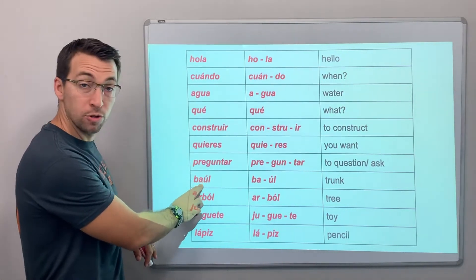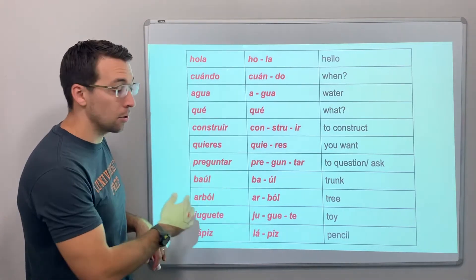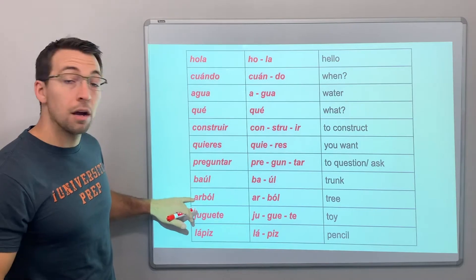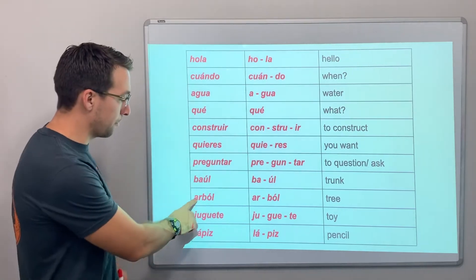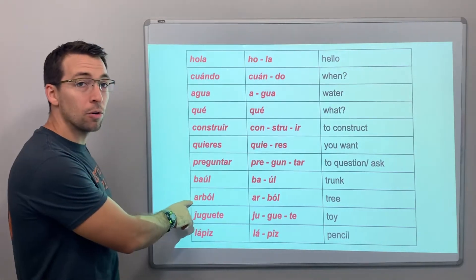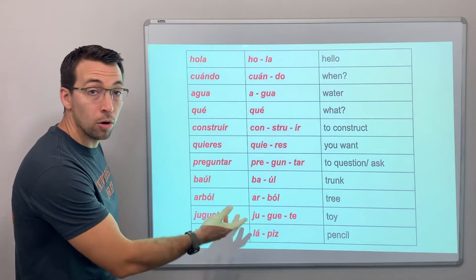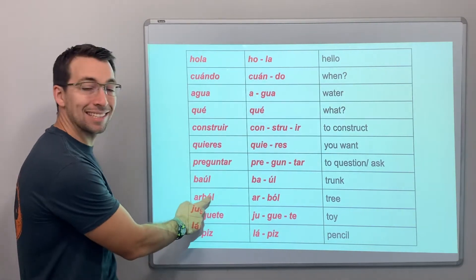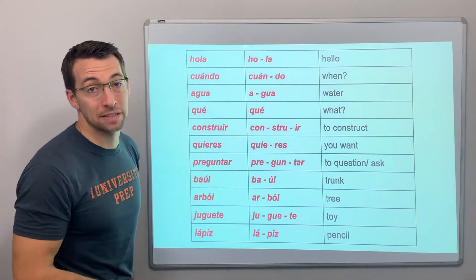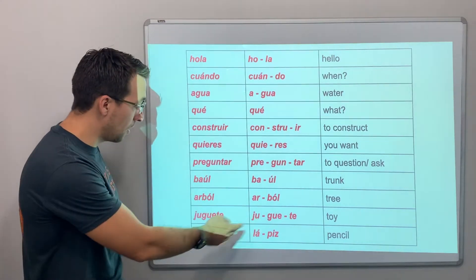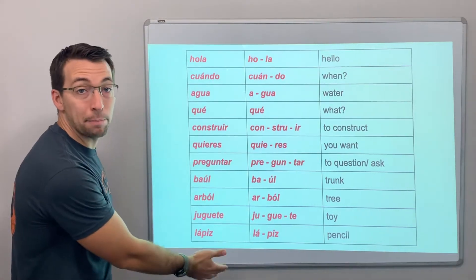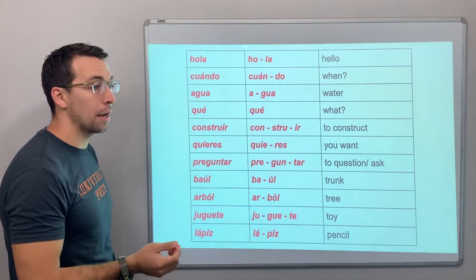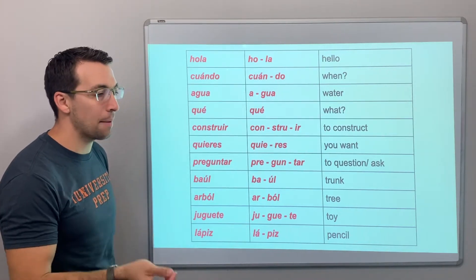Baúl — two vowels, and the accented one is the second: baúl. Árbol — notice: árbol or árbol? The accented vowel receives the emphasis, so it's árbol. Juguete. Lápiz — is it lápiz or lápiz? It's not lápiz.